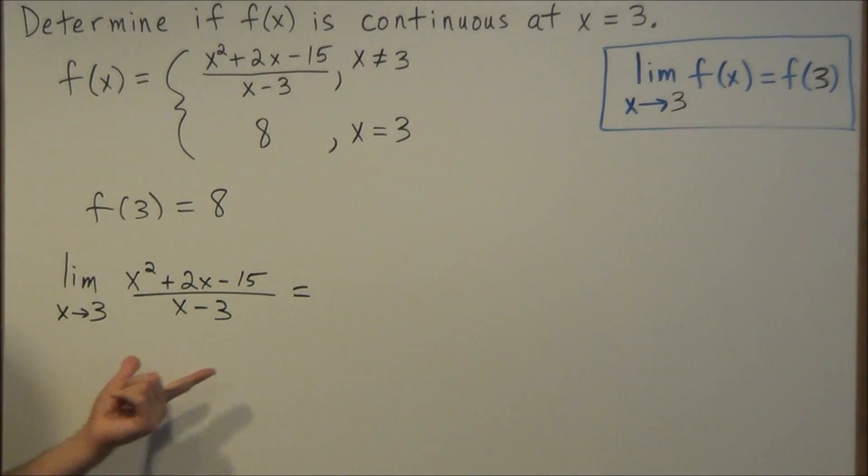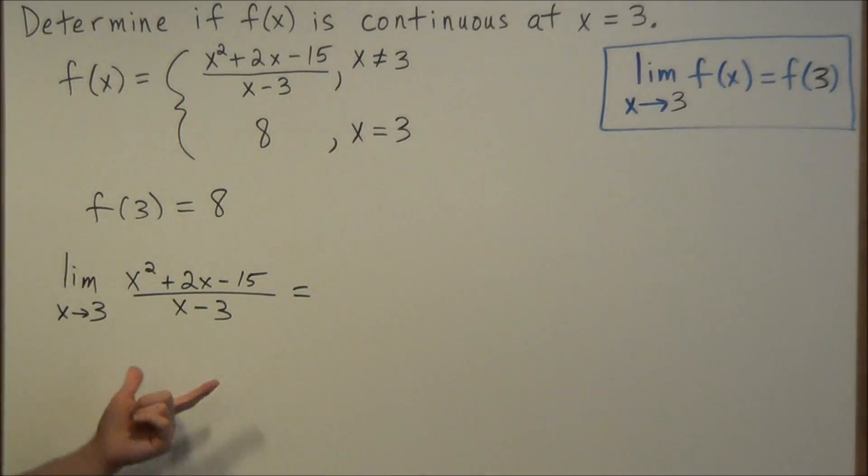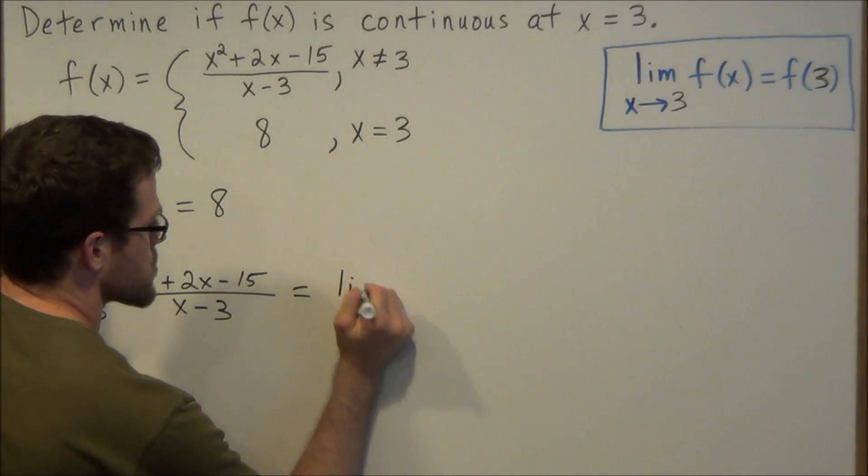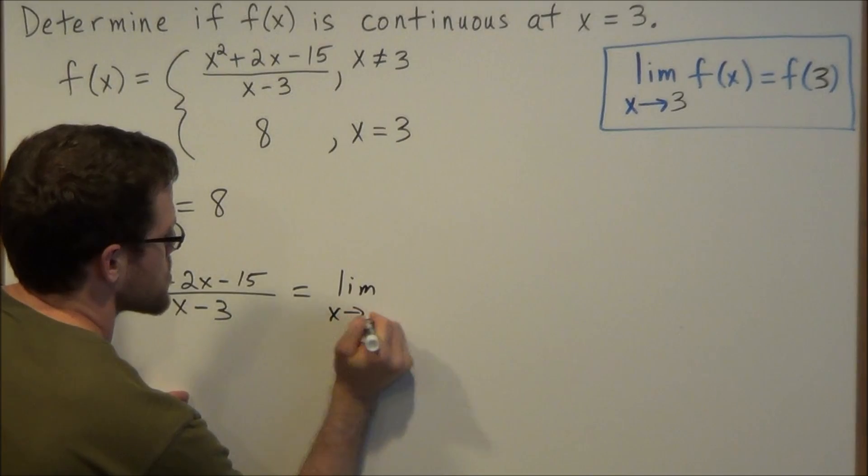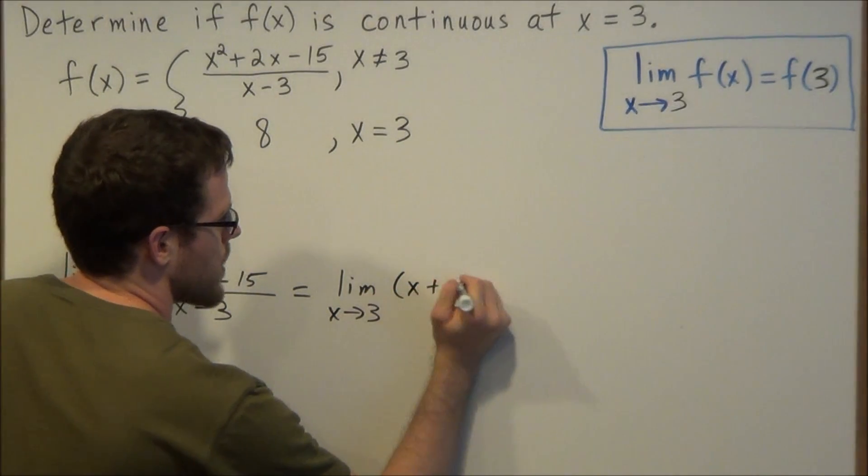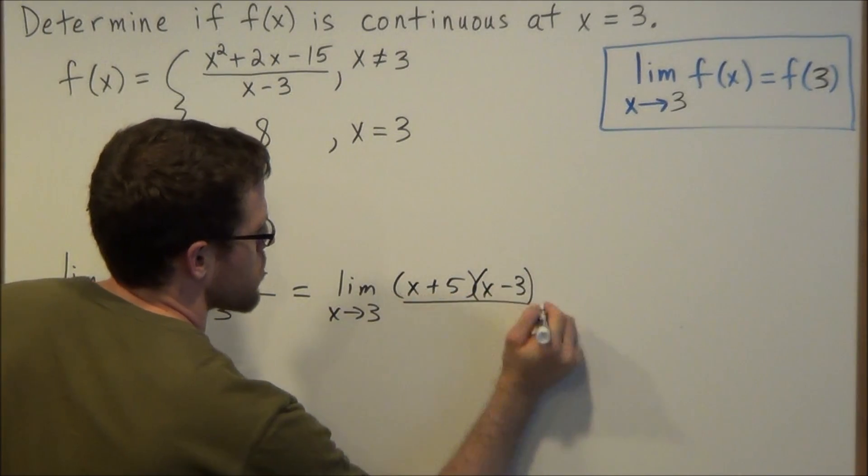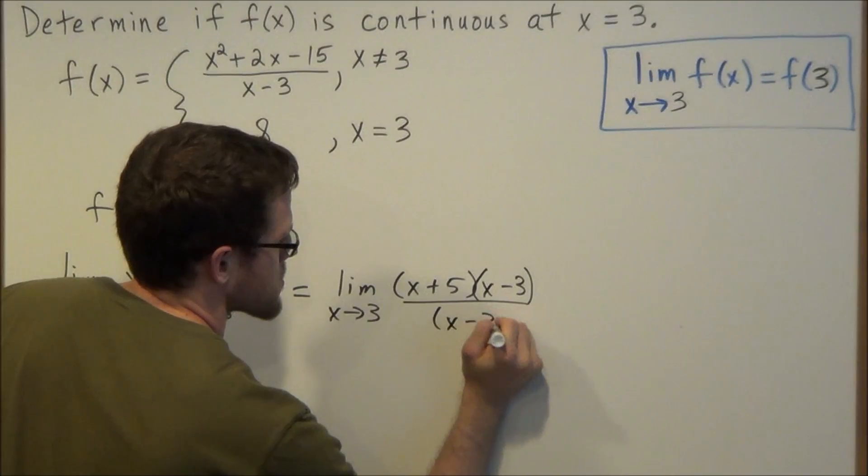So to evaluate this limit, we're going to solve it or reduce it algebraically. This will simplify to the limit as x approaches 3, and we factor this quadratic to x plus 5 times x minus 3, and this is all over x minus 3.